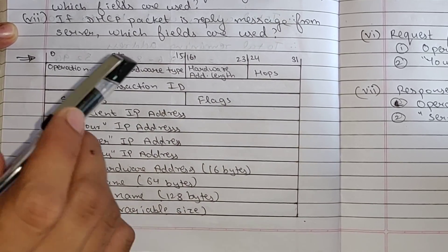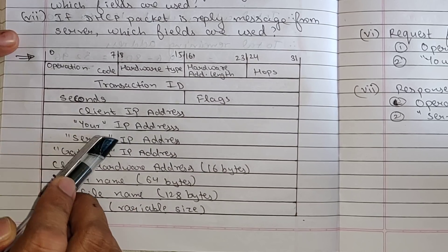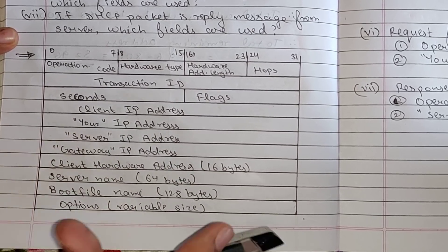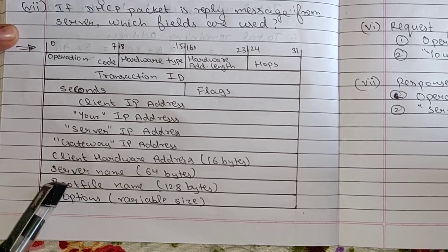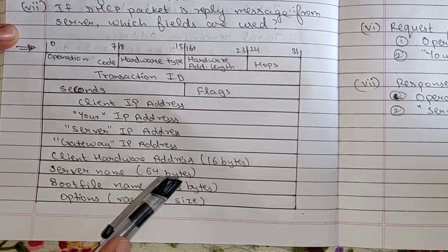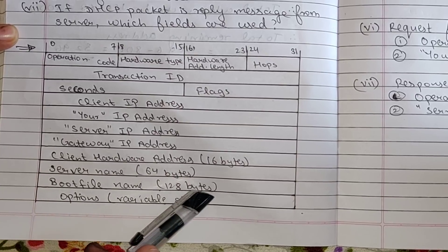Gateway IP address full length, and by full length I mean they are each of 32 bit. Next is client hardware address that is 16 bytes. Next is server name 64 bytes, boot file name 128 bytes.